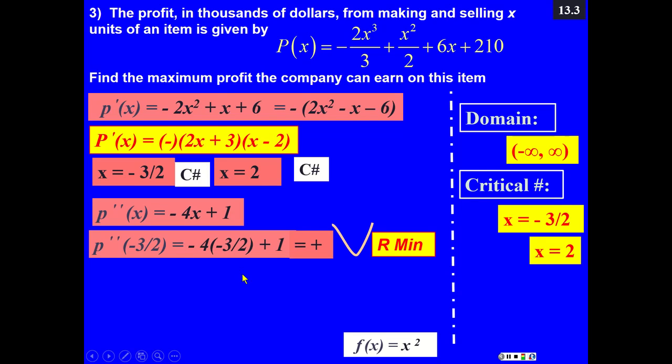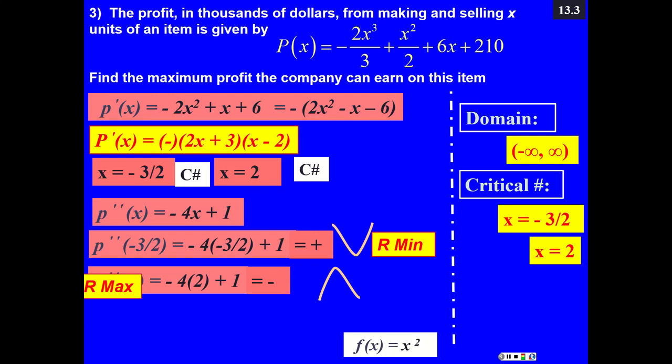Now again, for this problem, this was not necessary to do because the item was negative. But now, P''(2) = -4(2) - 8 + 1 = -7. As you see, I did not indicate this -7, I just say minus. If it is negative, that means in this area my graph is downward. Then this point, which is the highest curve on the graph, is going to be my relative max. That's what the question was: find the maximum profit.